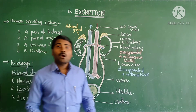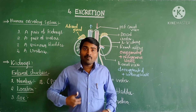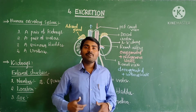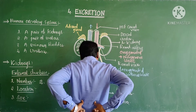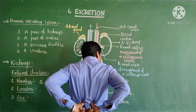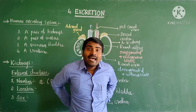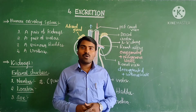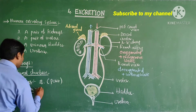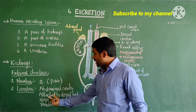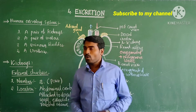If we talk about location, where are these kidneys located? The kidneys are located in the abdominal cavity, attached to the dorsal body wall — the back side body wall — either side of the backbone or vertebral column. So that is the location of the kidneys.